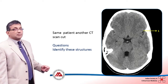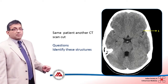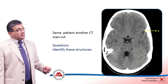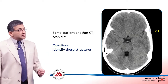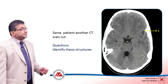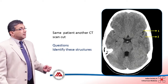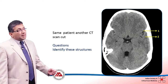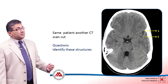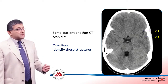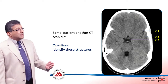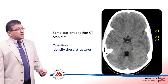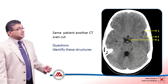That is a CSF space — looking at its position, it appears to be the sylvian fissure. The part of the brain adjacent to the sylvian fissure is the temporal lobe. And there, again, is part of the cistern — the basal cistern.